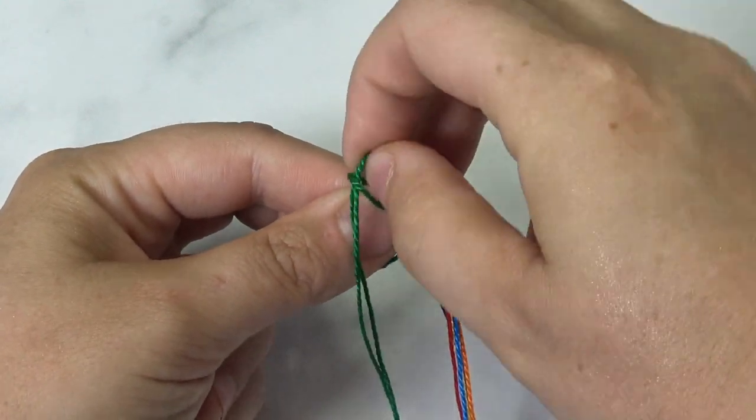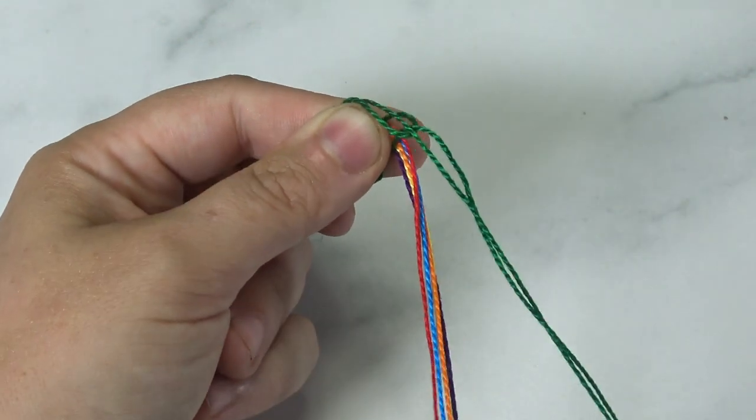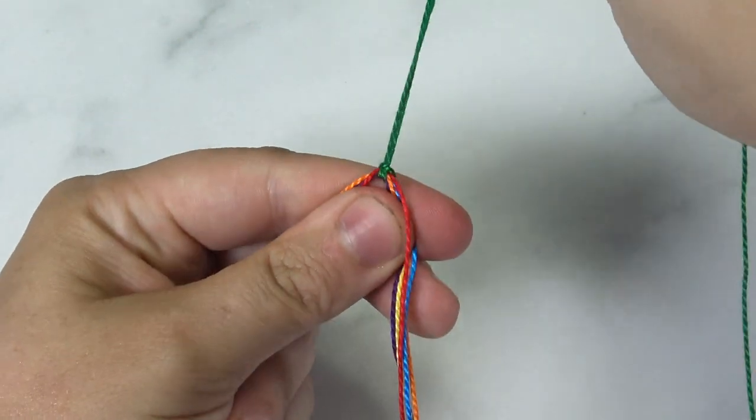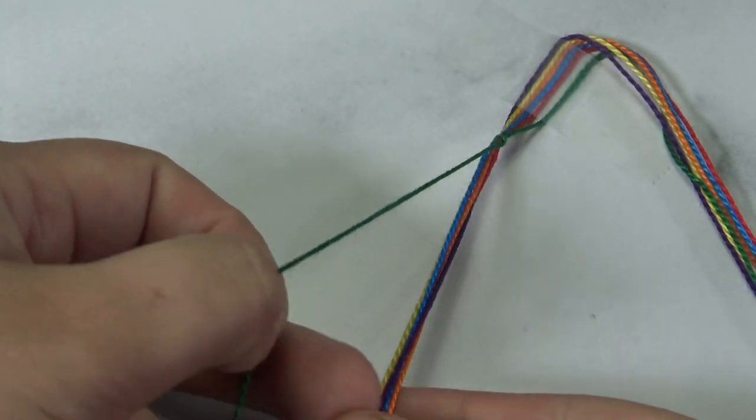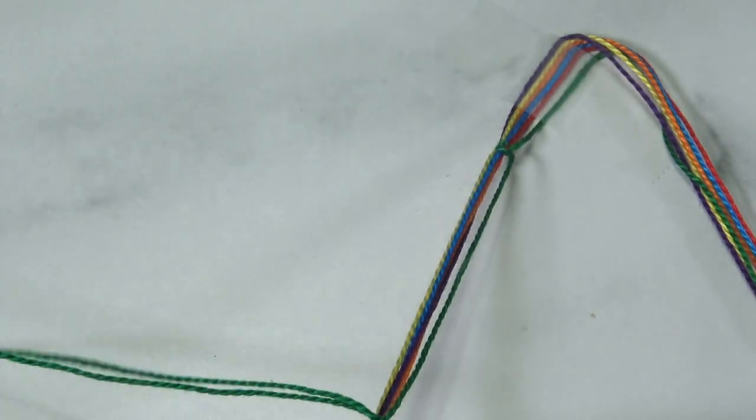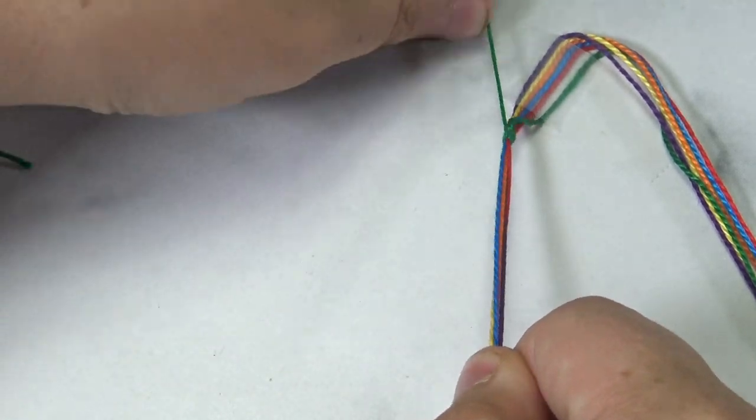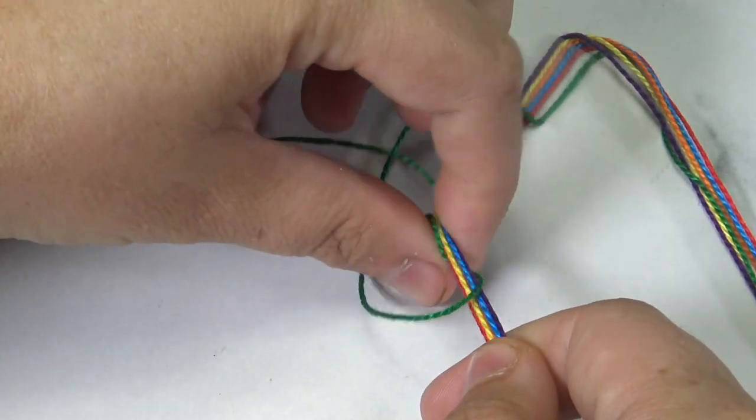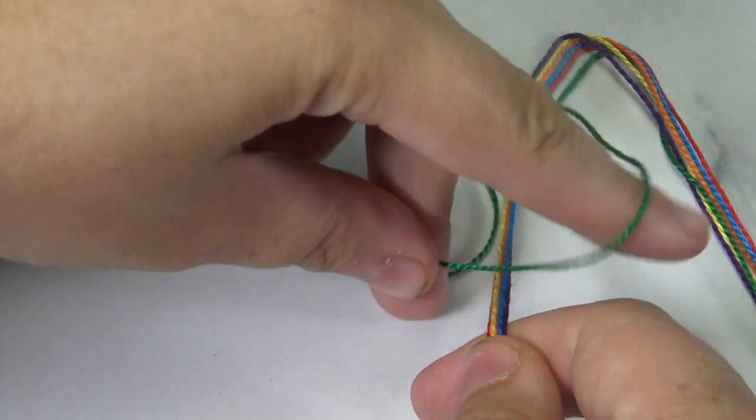Pick one color of choice and loop all the other strings through that one color like this. Now we're going to go ahead and pick that one color and do a forward and backward stitch on one side of your colors. I do this about ten times.